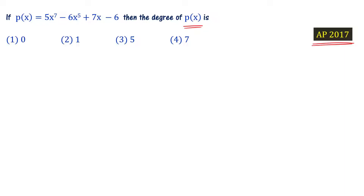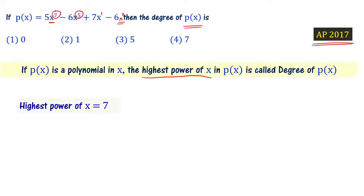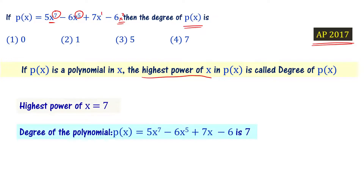The degree of a polynomial is the highest power of the variable x. In this polynomial, the powers of x are 7, 5, 1, and x⁰ (the constant term). So the highest power is 7, meaning the degree of the given polynomial is 7. This is choice 4.